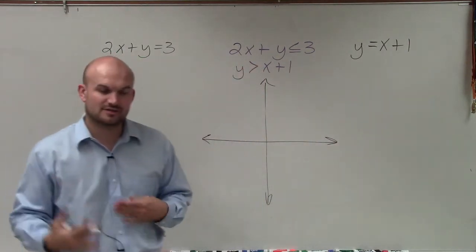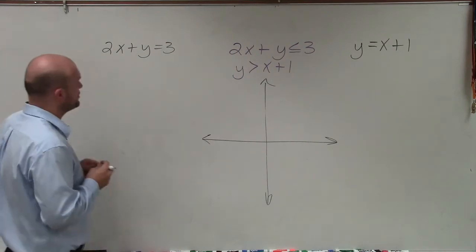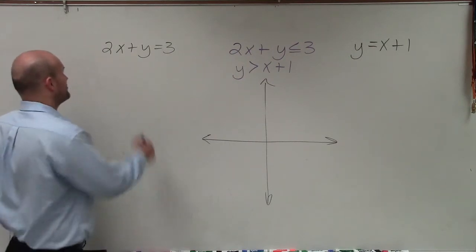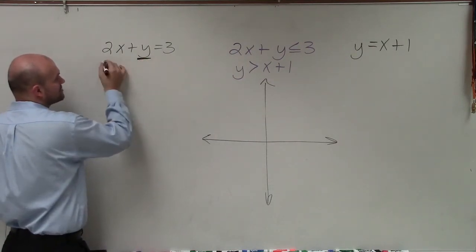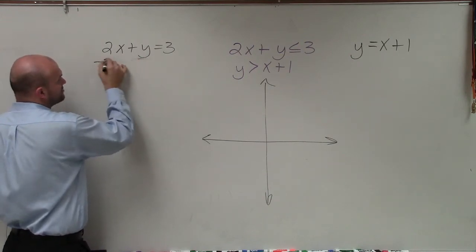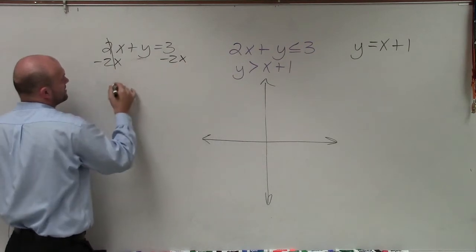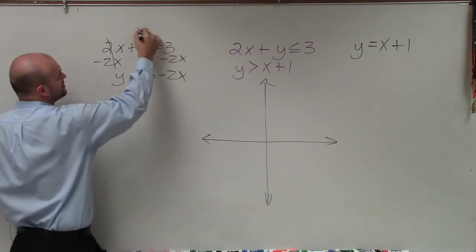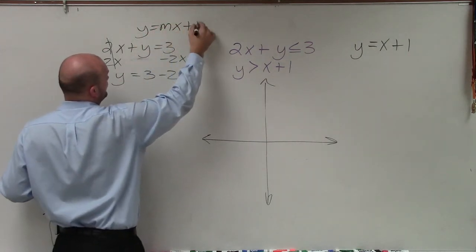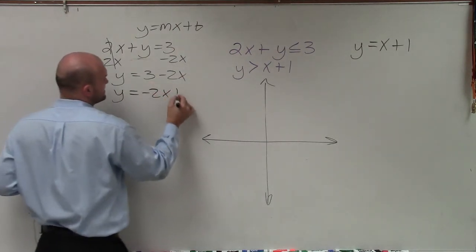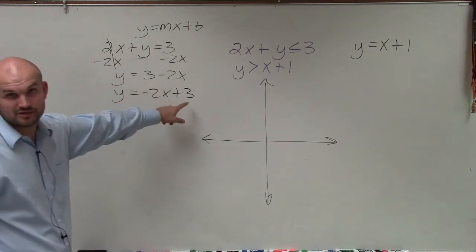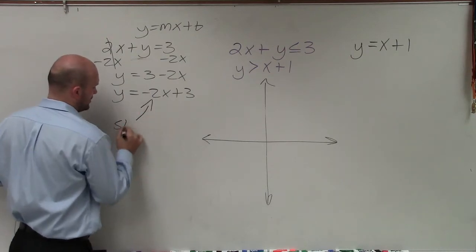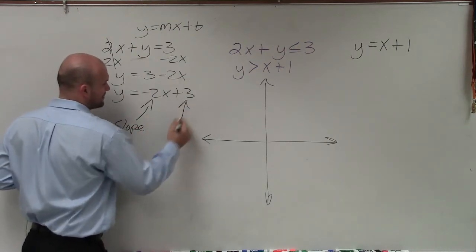We will have to determine if our boundary line is solid or dashed, but that's straightforward. The first thing you want to do, if I was going to graph 2x plus y equals 3, is rewrite this in slope-intercept form. To do that, I need to isolate y by subtracting 2x on both sides. That gives me y equals 3 minus 2x, which I'll rewrite as y equals negative 2x plus 3. So my slope is negative 2, and my y-intercept is positive 3.